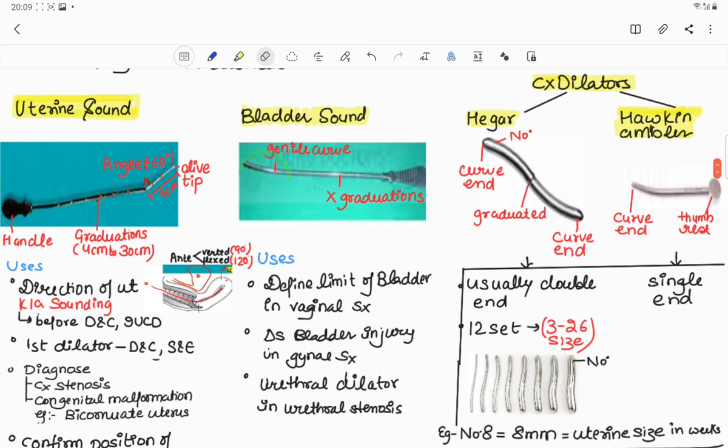Another sound is bladder sound. In comparison to uterine sound, it does not contain any graduations and it has a gentle curve at the end. Number one, it is used to define the limit of the bladder in vaginal surgeries or diagnosing bladder injury in gynecological surgeries. And it is used as a urethral dilator in urethral stenosis.